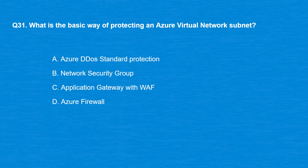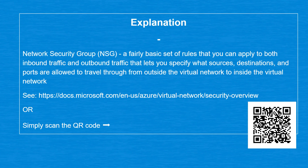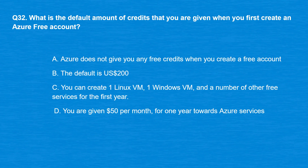Question 31: What is the basic way of protecting an Azure virtual network subnet? Option A: Azure DDoS Standard Protection. Option B: Network Security Group. Option C: Application Gateway with WAF. Option D: Azure Firewall. The correct answer is Option B, Network Security Group. An NSG is a fairly basic set of rules you can apply to both inbound and outbound traffic, specifying what sources, destinations, and ports are allowed through the virtual network.